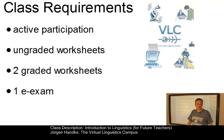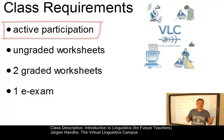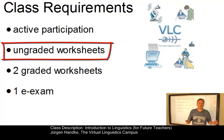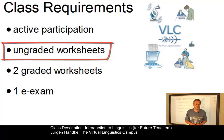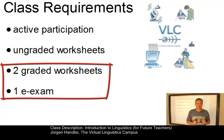You want to know what you have to do in order to get the class credits. First, of course, we want you to actively participate in our class. Then, we give you the opportunity to do several ungraded worksheets — one worksheet per e-learning unit. For your instructor, these are important hints as to whether you have understood the content of a unit prior to the in-class meeting or not. And on the basis of two graded worksheets and one final e-exam, you will eventually be given your class grade.